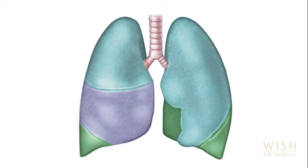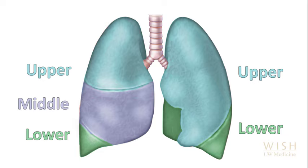The right lung has three lobes: upper, middle, and lower. The left has only two: upper and lower.